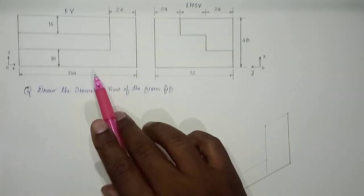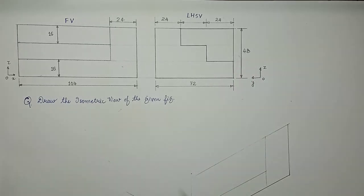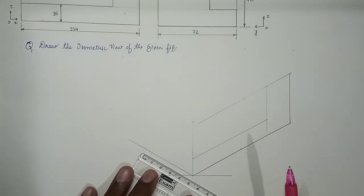At the same time, if we look at the side view, in the side view we have 72 by 48. So we mark 72 on this side.